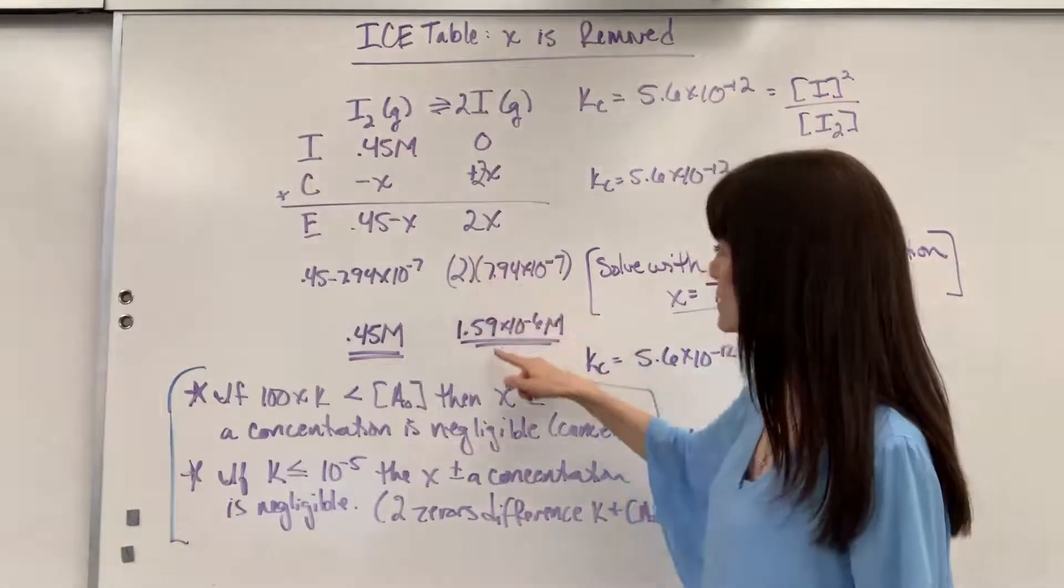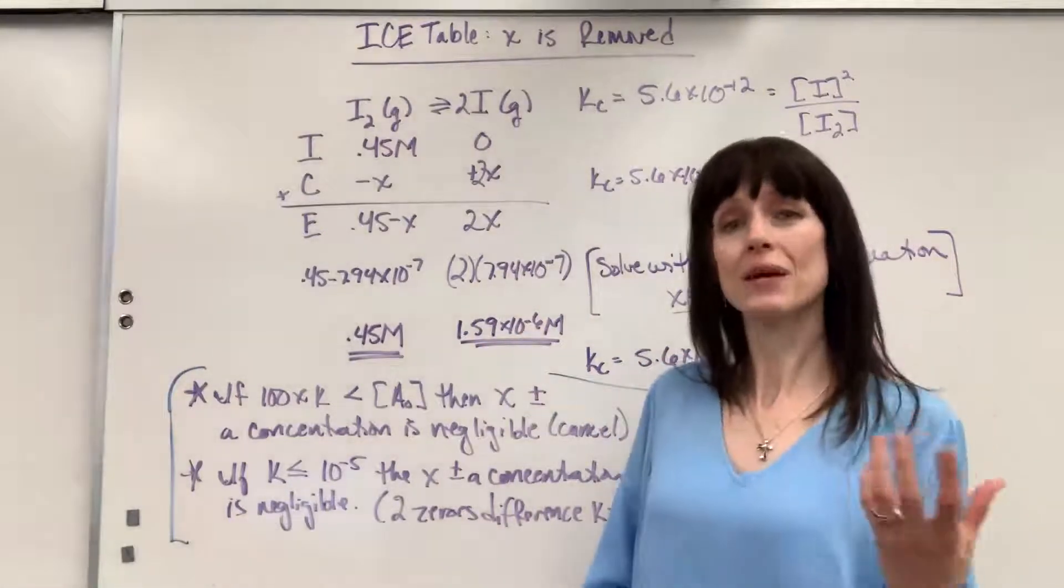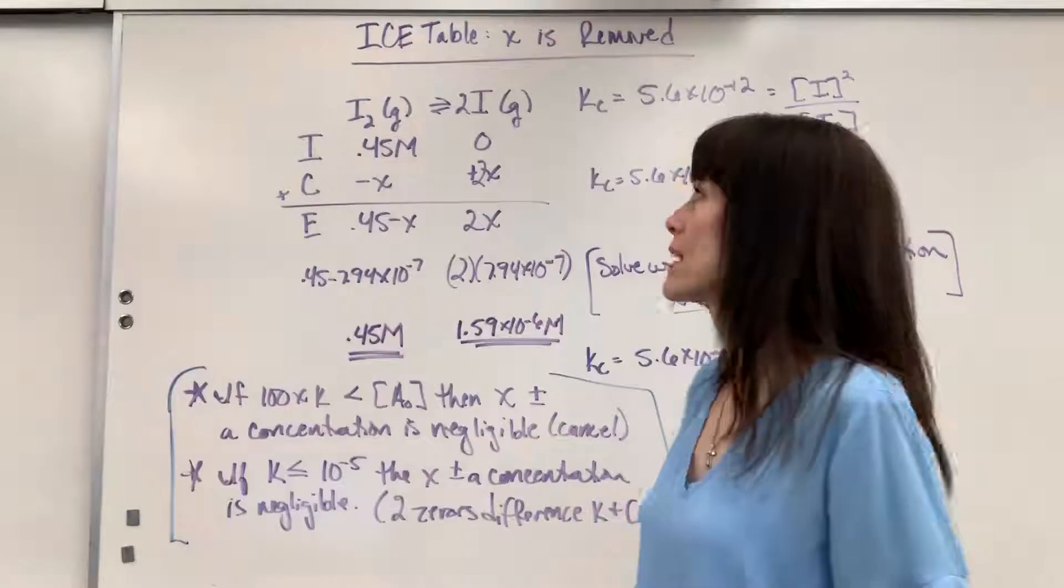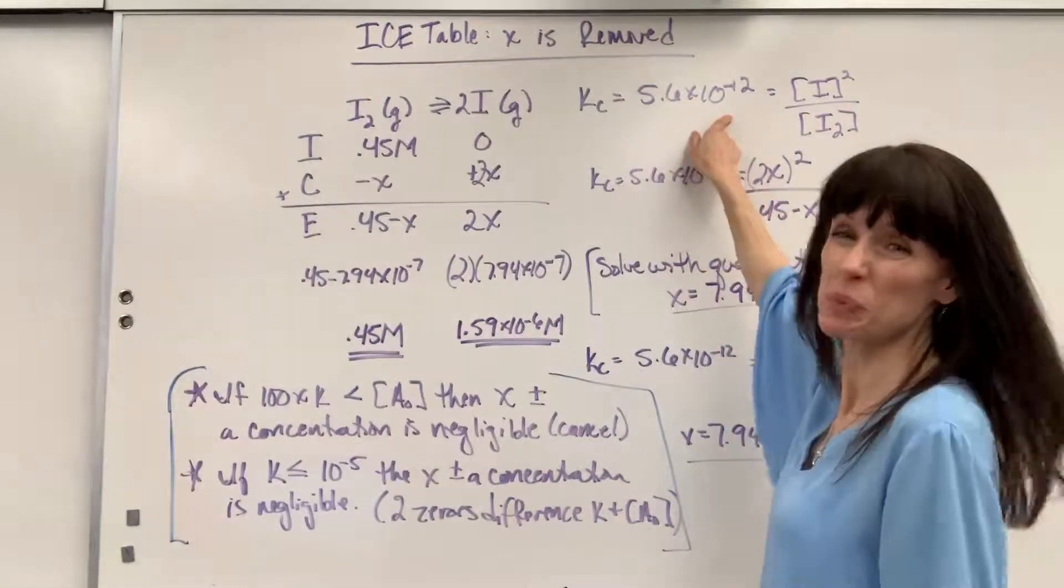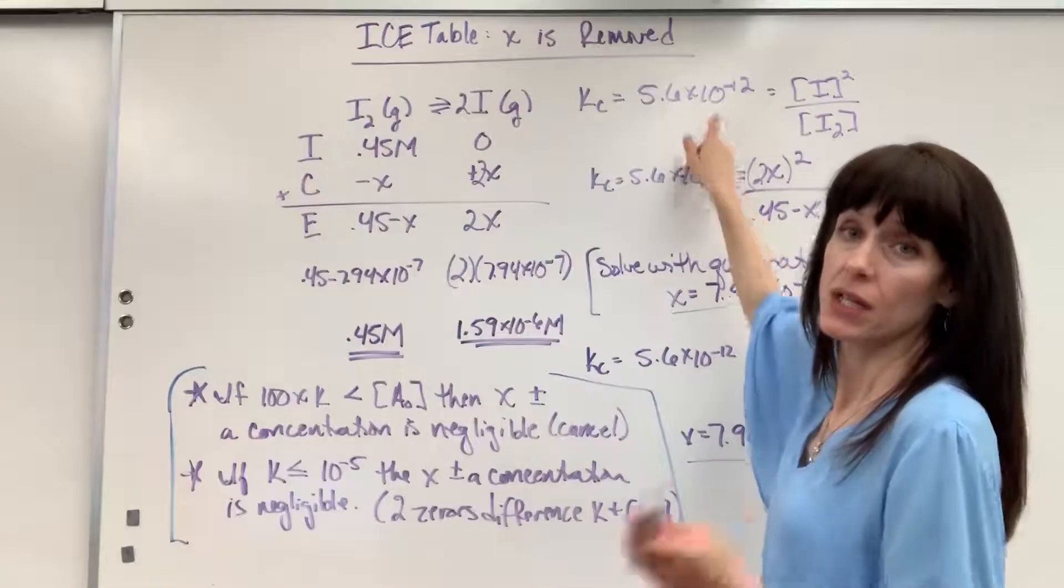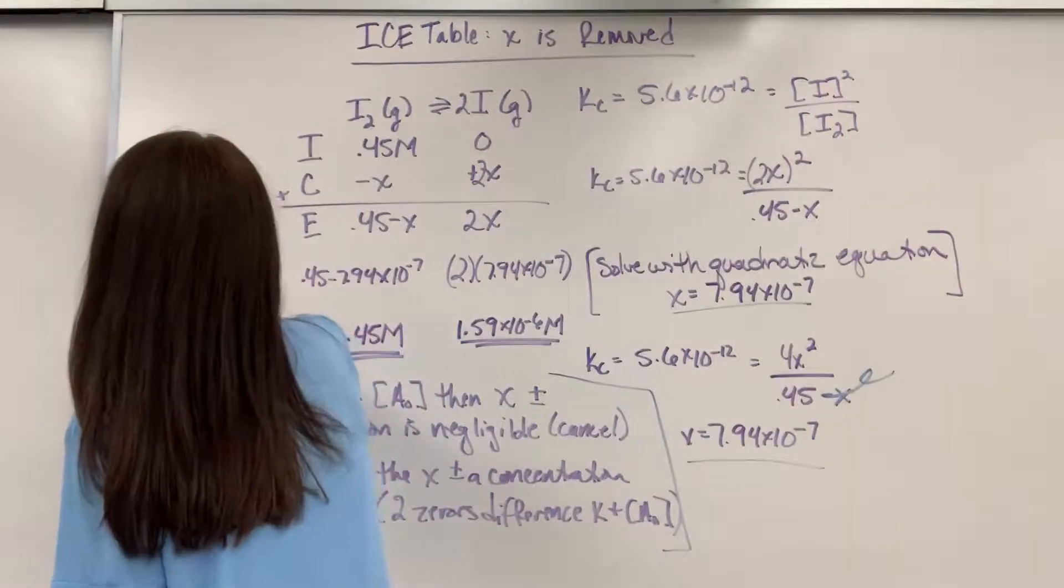Then two times x, really small, 1.590 times 10 to the minus 6. Now think about this with me for just a second. Our Kc value, this equilibrium constant, super small, 10 to the minus 12. Now you and I know products over reactants, that is our K value.